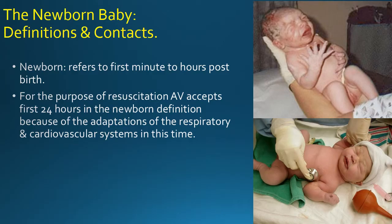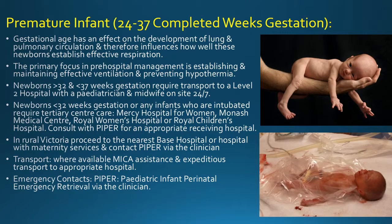The newborn baby: definitions and contacts. Newborn refers to the first minutes to hours post birth. For the purpose of resuscitation, Ambulance Victoria accepts the first 24 hours in the newborn definition because of the adaptations of the respiratory and cardiovascular systems in this time. Premature infant: 24 to 37 completed weeks gestation. Gestational age has an effect on the development of lung and pulmonary circulation and therefore influences how well these newborns establish effective respiration.